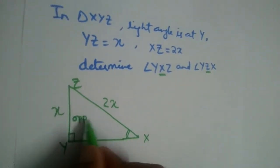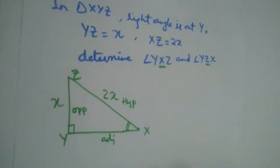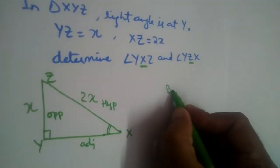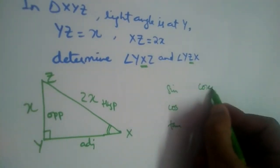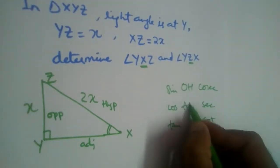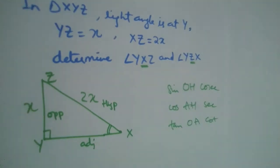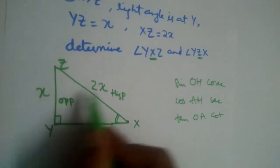To angle X, this is the opposite side and this is the hypotenuse and this is adjacent. Right? Now we learned trigonometric formulas: sine, cos, tan, cosecant, secant, cot.